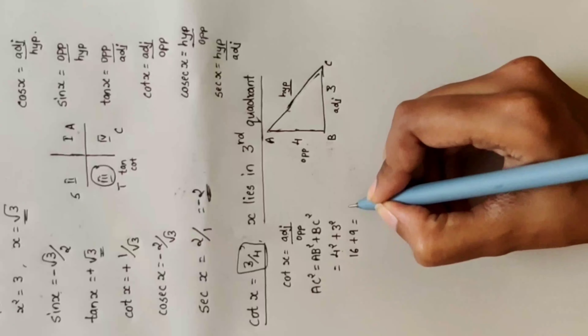Cot x = adjacent divided by opposite = 12 by 5. Sin x = opposite divided by hypotenuse = 5 divided by 13.